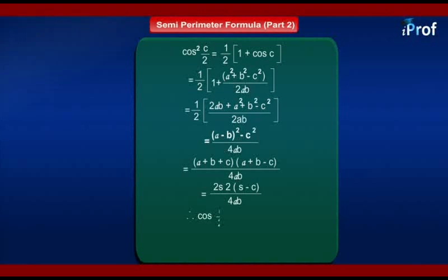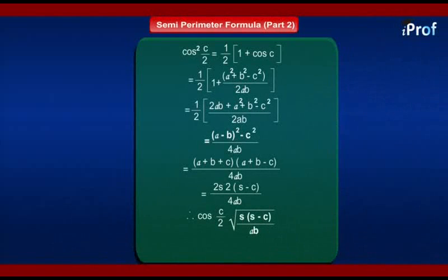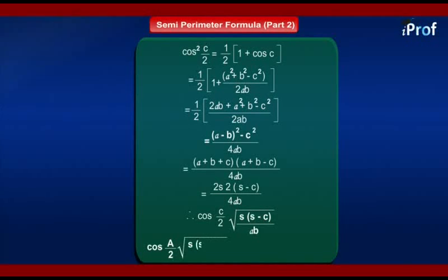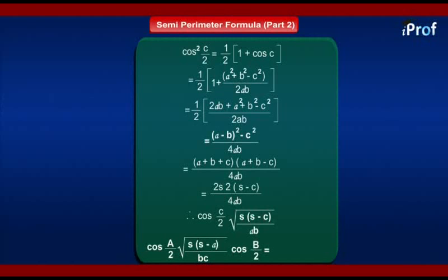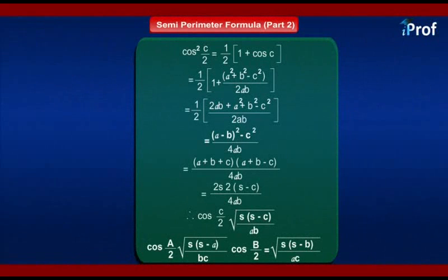Therefore, cos(C/2) equals √[S(S minus C) divided by AB]. Note that we have rejected the negative sign because cos(C/2) is positive in the first quadrant, C/2 being less than 90 degrees. Similarly, cos(A/2) equals √[S(S minus A) divided by BC], and cos(B/2) equals √[S(S minus B) divided by AC].